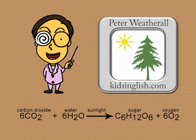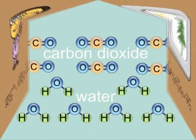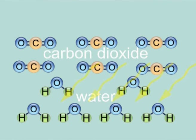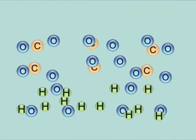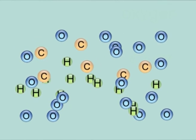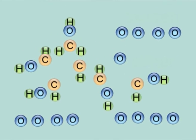Photosynthesis is the way plants use sunlight to turn carbon dioxide and water into sugar and oxygen. Plants use the energy in sunlight to split molecules of carbon dioxide and water apart. The atoms of carbon, oxygen and hydrogen can then be recombined to form sugar and oxygen molecules.